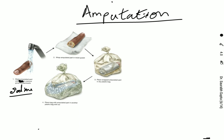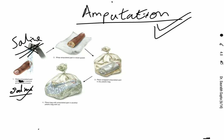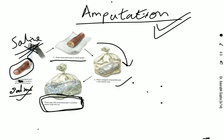For preservation of amputated parts, amputated digits are first cleaned in saline solution — not tap water. After cleaning with saline, the amputated part is wrapped in moist gauze, then placed in a dry plastic bag, and placed on a bed of ice so that it is preserved.